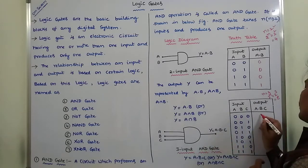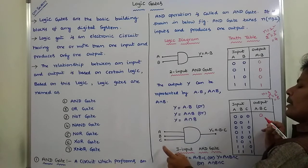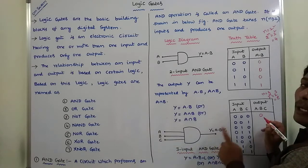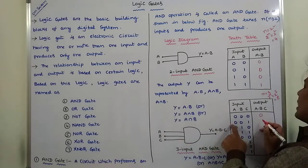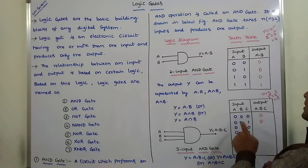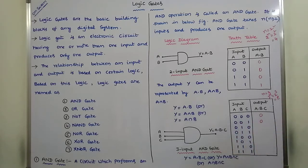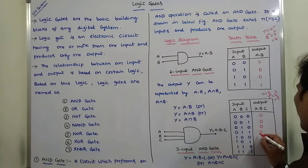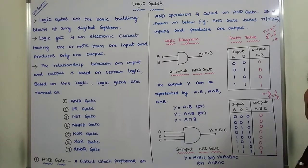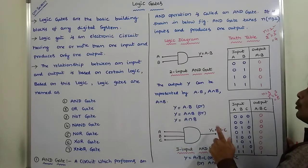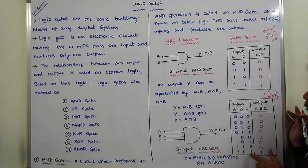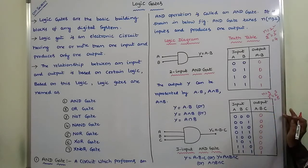For the 3-input AND gate truth table: Y = A × B × C. When A=0, B=0, C=0, the output is 0. All output values are 0 except the last combination. When A=1, B=1, C=1, the output Y = 1×1×1 = 1. In all remaining cases, the output is 0.